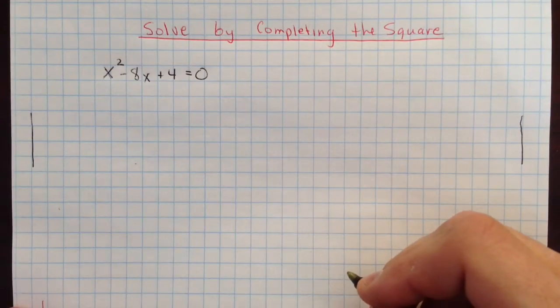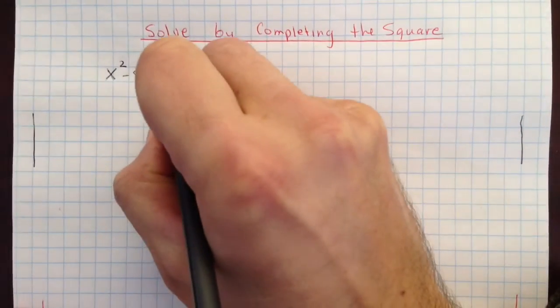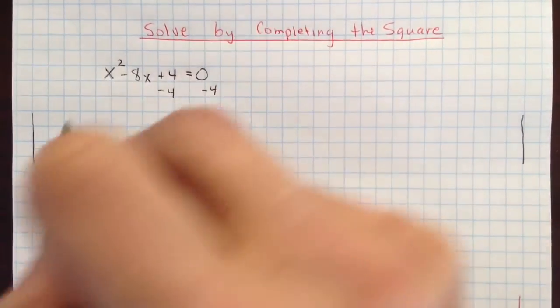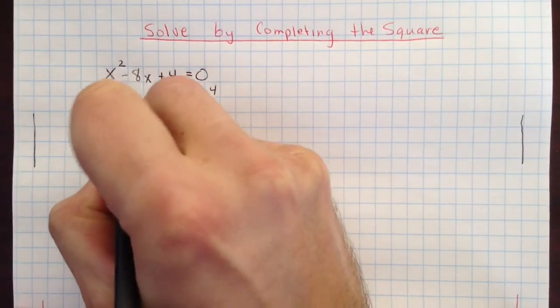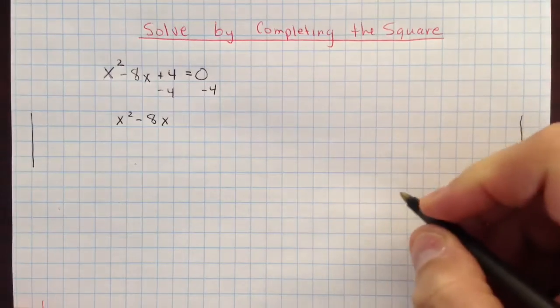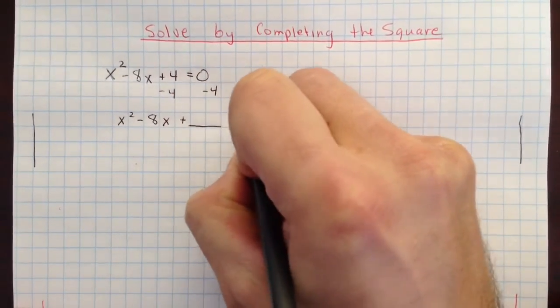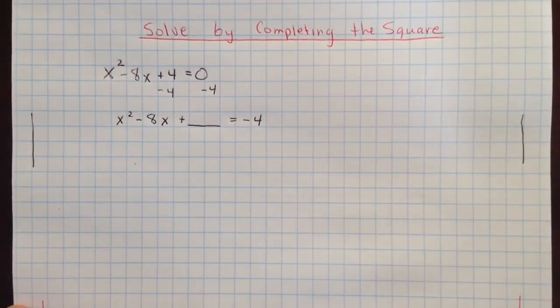The first thing we want to do is get the constant term on the other side. So we'll go ahead and subtract 4 from both sides to do that. And when we do that, we get x squared minus 8x. I'll leave a little space here, so I just kind of go plus, leave a space, and then equals negative 4.